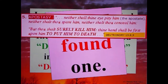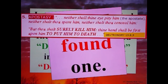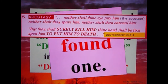Apostasy. 'Neither shall thine eye pity him, the apostate. Neither shalt thou spare him, neither shalt thou conceal him. But thou shalt surely kill him. Thine hand shall be the first upon him to put him to death.' And there it is, highlighted in yellow — Deuteronomy 13, 8 and 9.